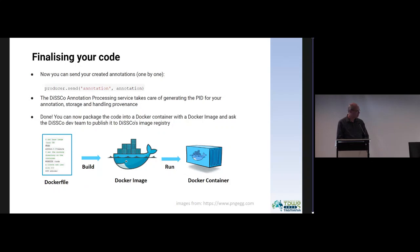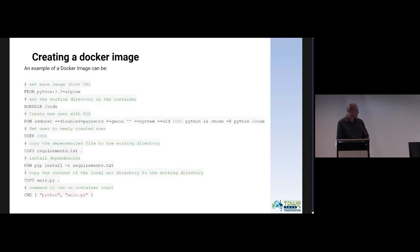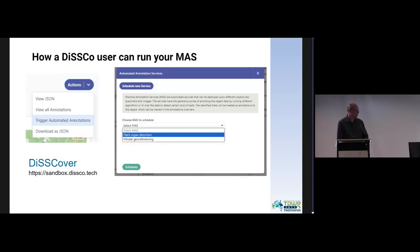Once your code is complete, you can finalize it by creating a Docker image and send it to us for evaluation, after which we can register your annotation service. This is an example of creating a Dockerfile. From the user interface perspective, a person can select a specific specimen in the sandbox environment, choose an action to trigger automated annotations, select the annotation service they want to operate, and then trigger it — it will be processed once it enters the queue.